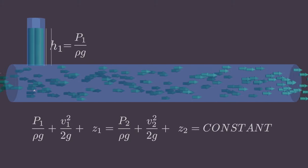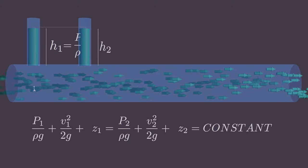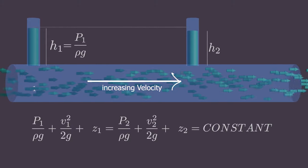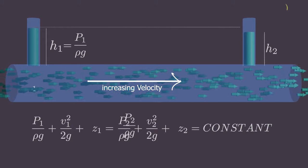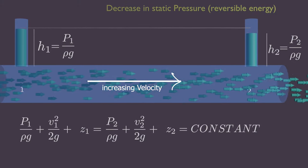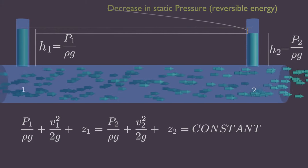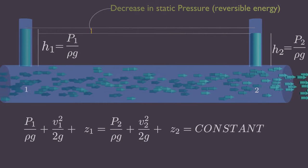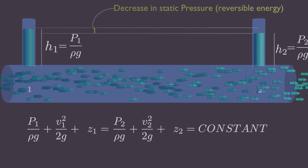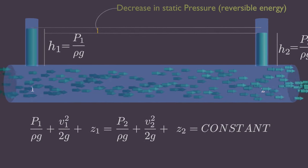For ideal flow along a streamline with no change in height, an increase in velocity results from a decrease in static pressure. Remember, I said ideal fluid - that means no losses or friction.